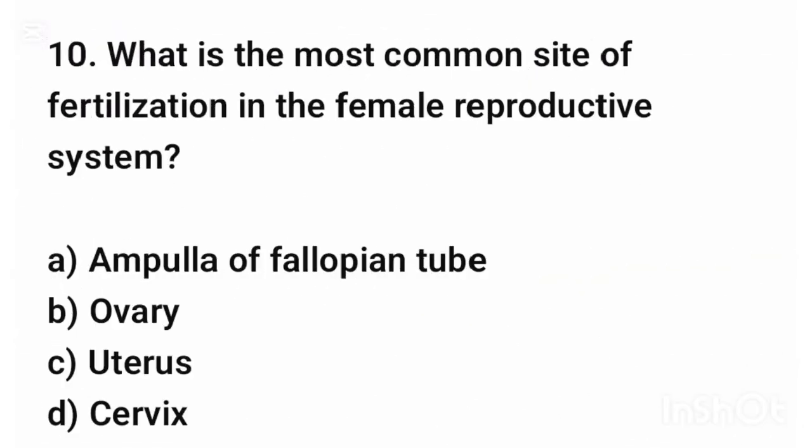Question number ten. What is the most common site of fertilization in the female reproductive system? The correct answer is option A: Ampulla of the fallopian tube.